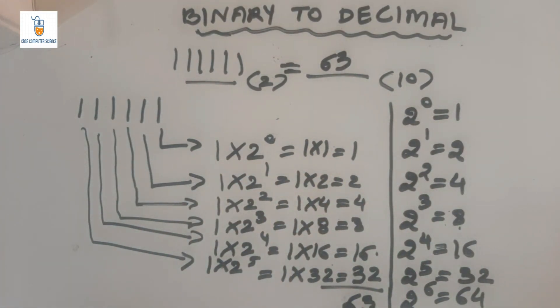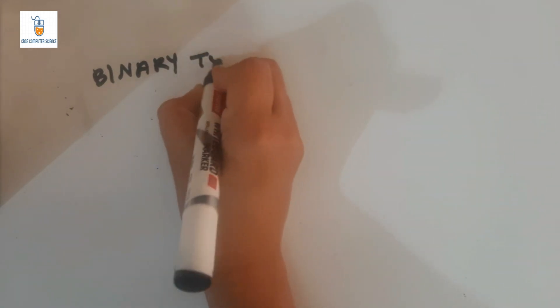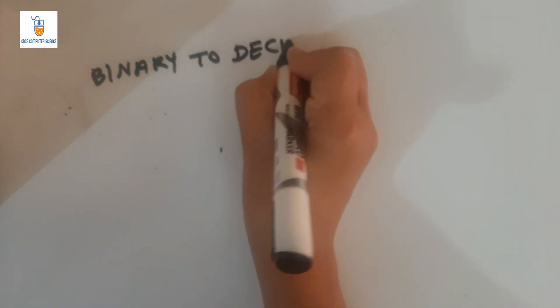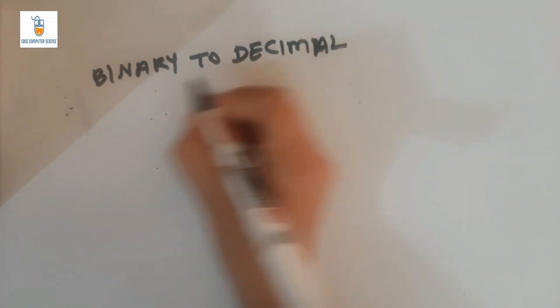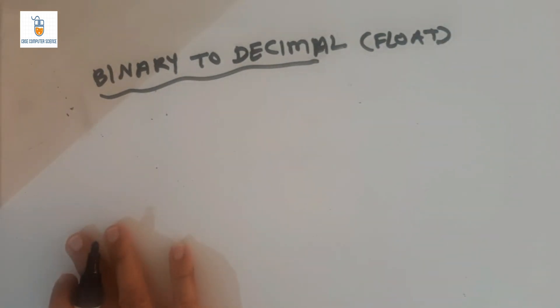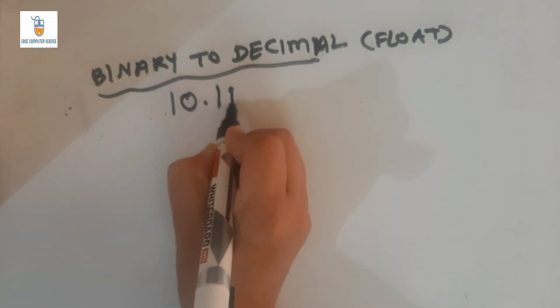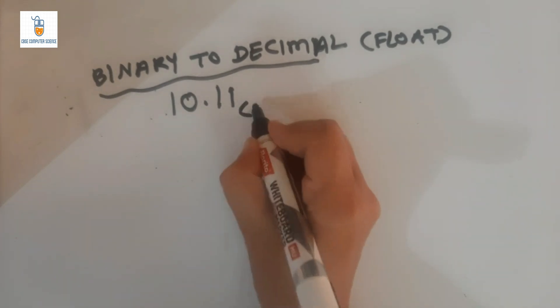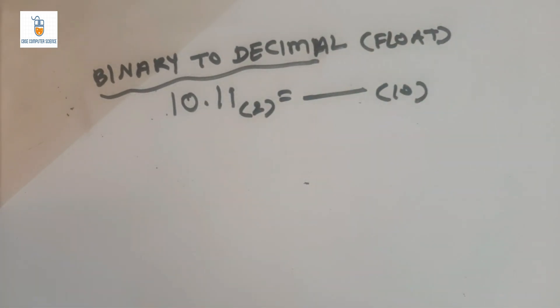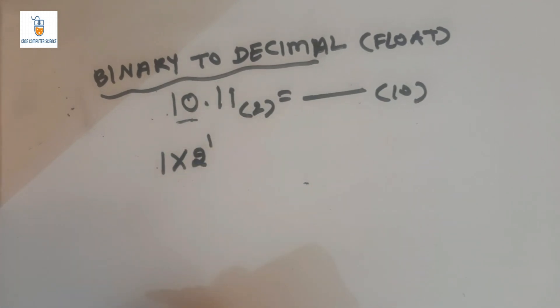Now, this was about a simple binary number. What if the number is given with a decimal or floating point value? Let us see how we can convert a binary decimal number — that is, a binary number having a dot in between, a floating point number — into its equivalent decimal form. Let us take the example: 10.11 to the base 2 is equal to what in base 10? I want to convert 10.11 base 2 into its equivalent decimal form.